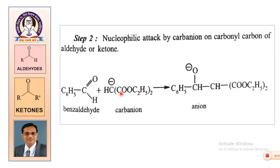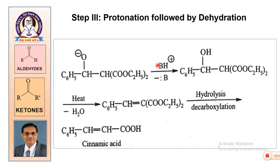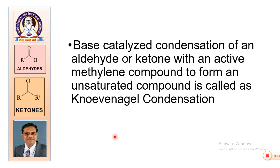The nucleophilic attack on the carbonyl carbon gives a nucleophilic addition product generating an alkoxide anion. In the next step, the anion is protonated. The protonated product is then dehydrated to give an unsaturated compound. The unsaturated compound on hydrolysis and decarboxylation gives the desired final product. These steps are carried out in sequence as required.